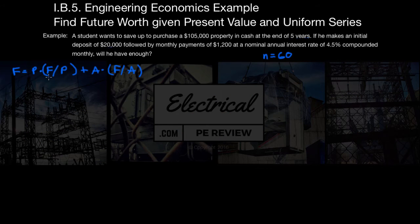Okay, so the first thing to do is write out our two formulas for F given P and F given A. We've got F equals P times 1 plus I to the exponent of N. The second one we've got A times, big parentheses, 1 plus I to the N minus 1 over I.